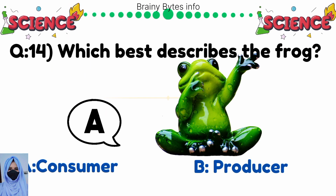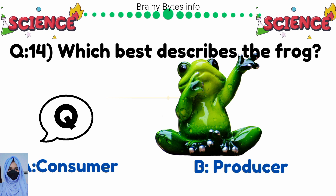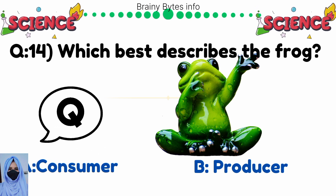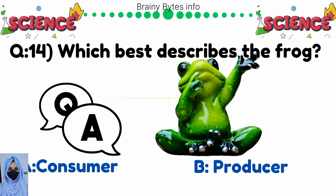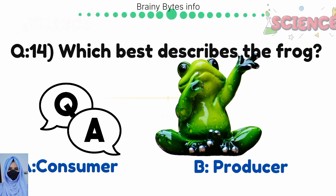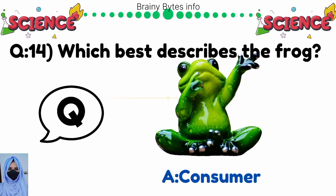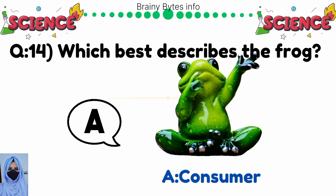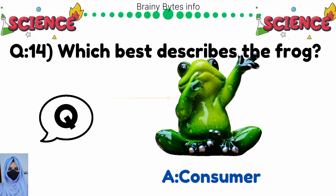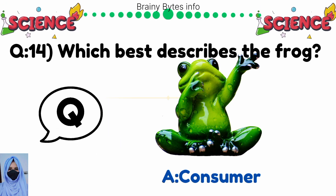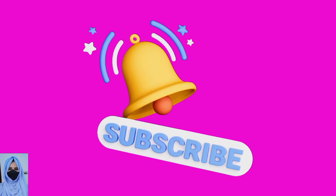Which best describes the frog? Option A: consumer, option B: producer. Correct answer is consumer.